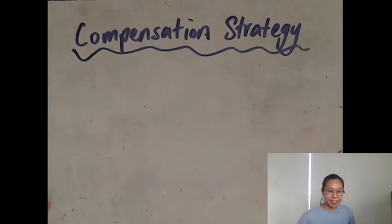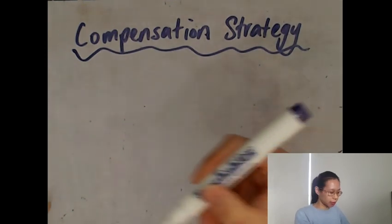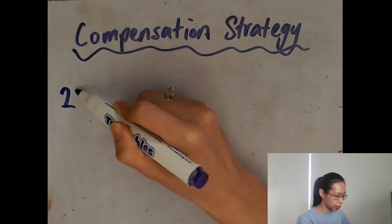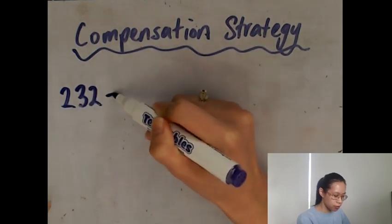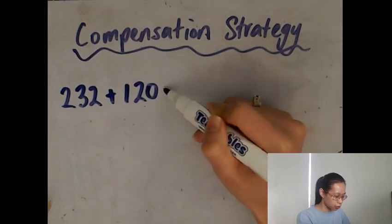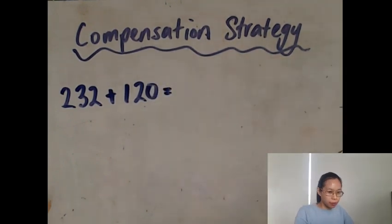Hi everyone, this is Miss Tang and I'm going to show you the compensation strategy for addition with three digit plus another three digit number. So if we have 232 plus 120, then what we need to know is how to round up and down in our hundreds.